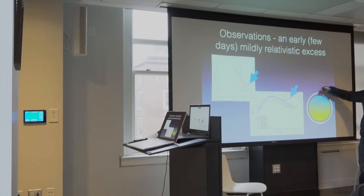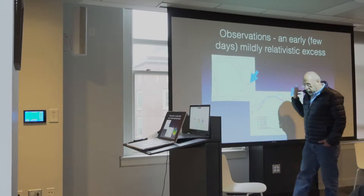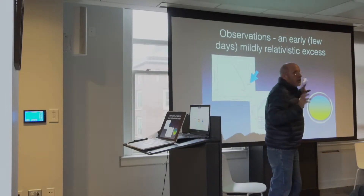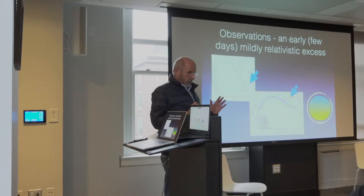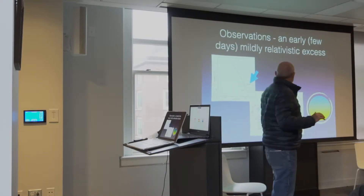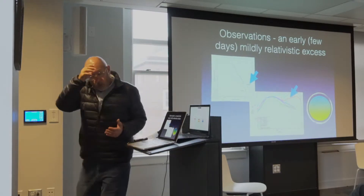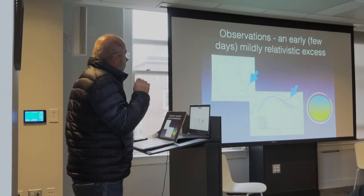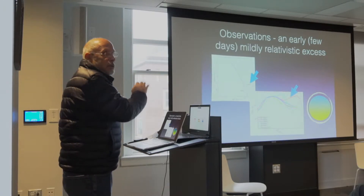If there are absorption lines here, we can measure the velocity of this material from those absorption lines. As time goes on, the ejecta expands and becomes sufficiently thin that the lines cannot be observed anymore, so this signature disappears. You cannot see it if you're looking at a supernova more than five or six days after the event. So there is a very small sample of supernovae with early enough spectra that could reveal this.